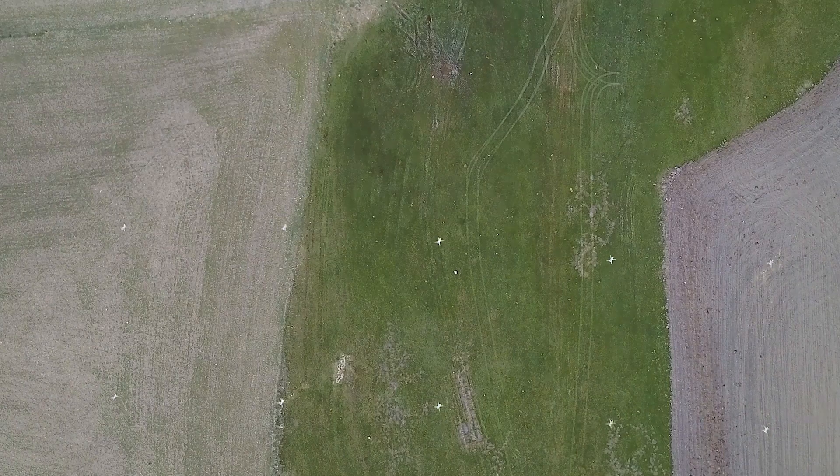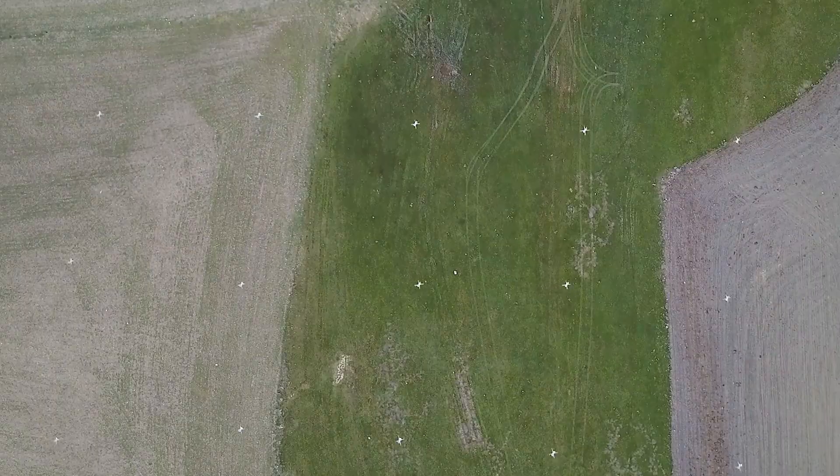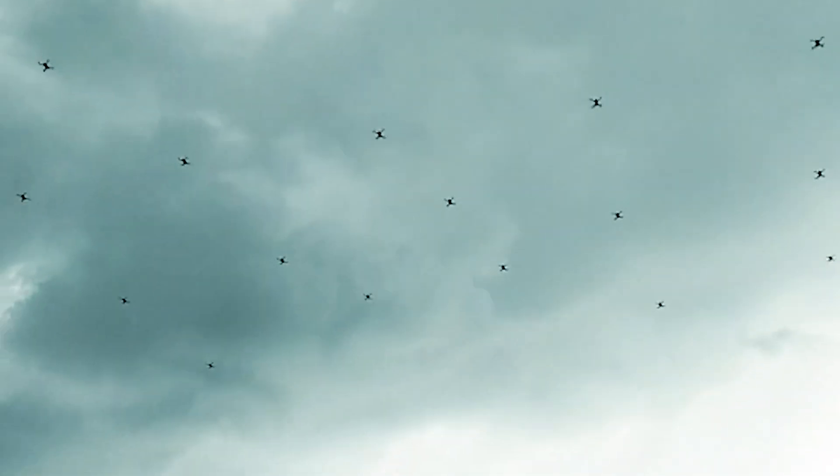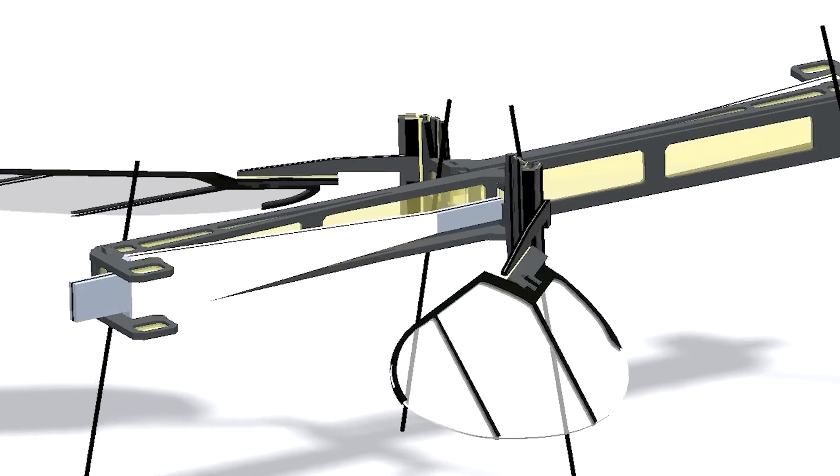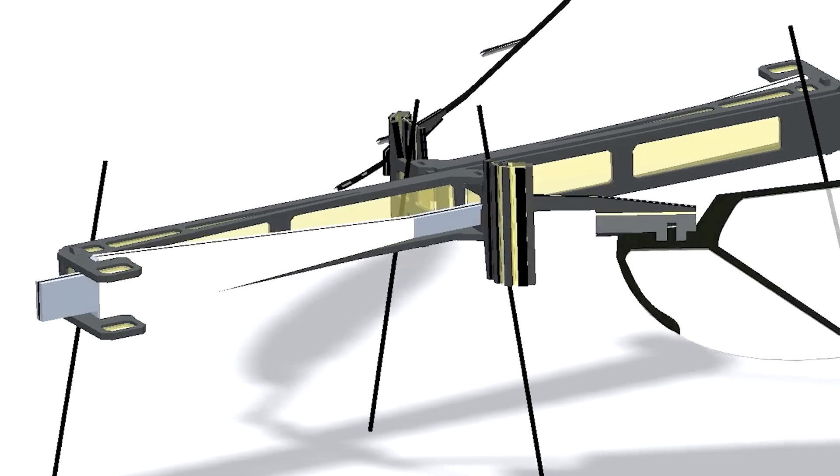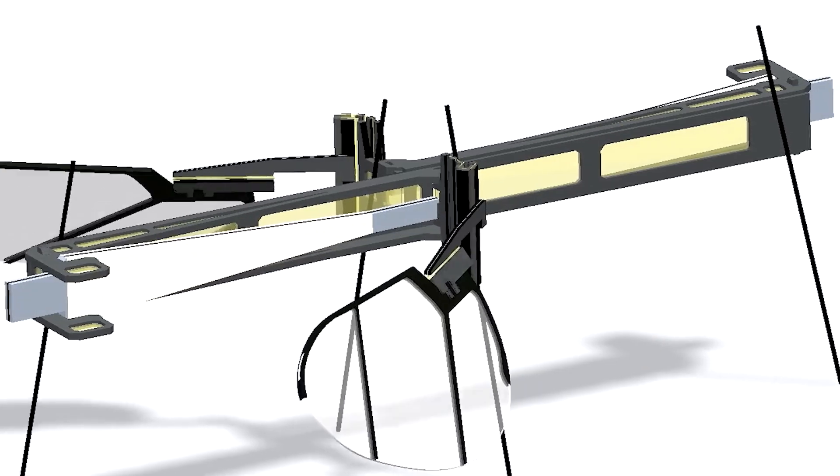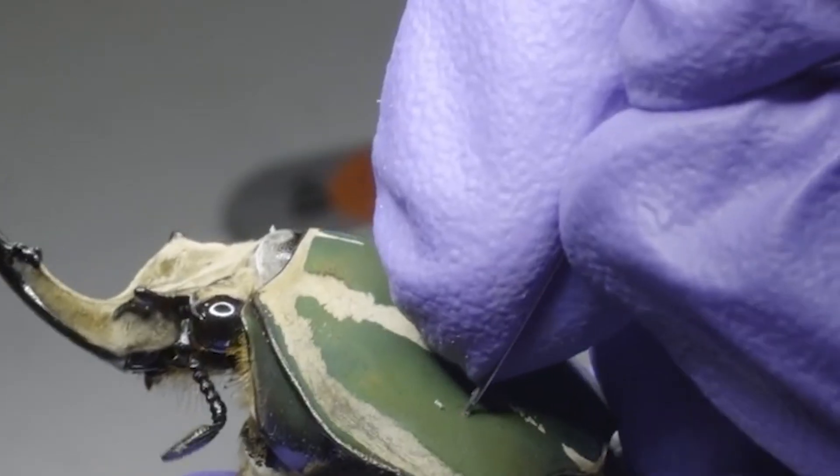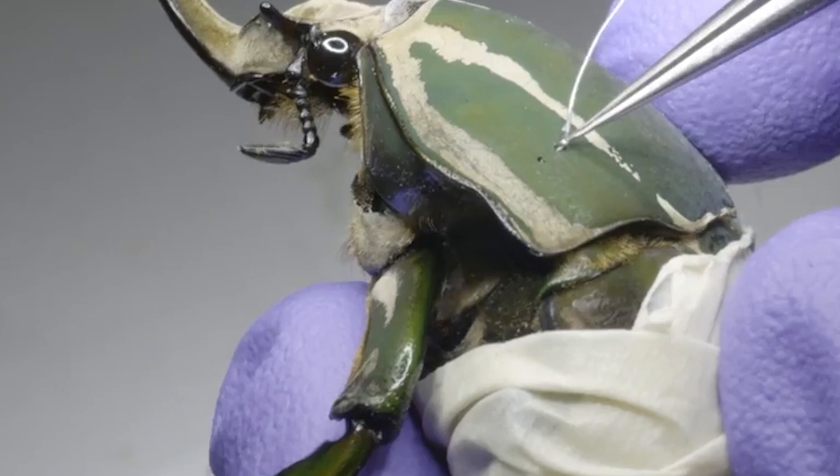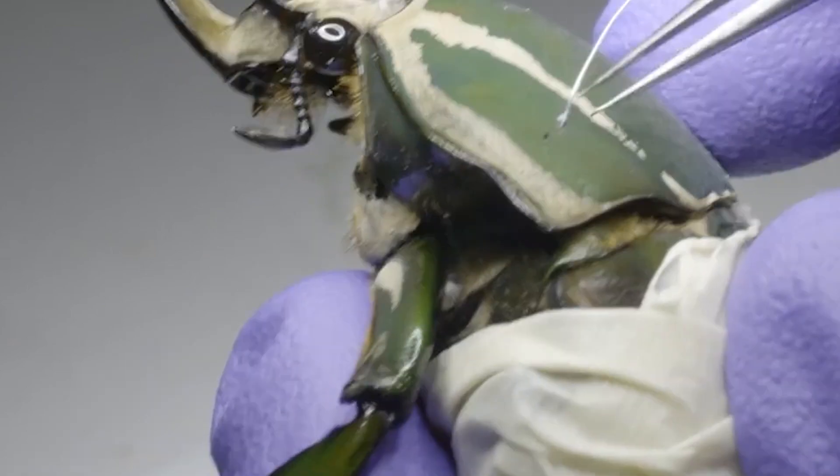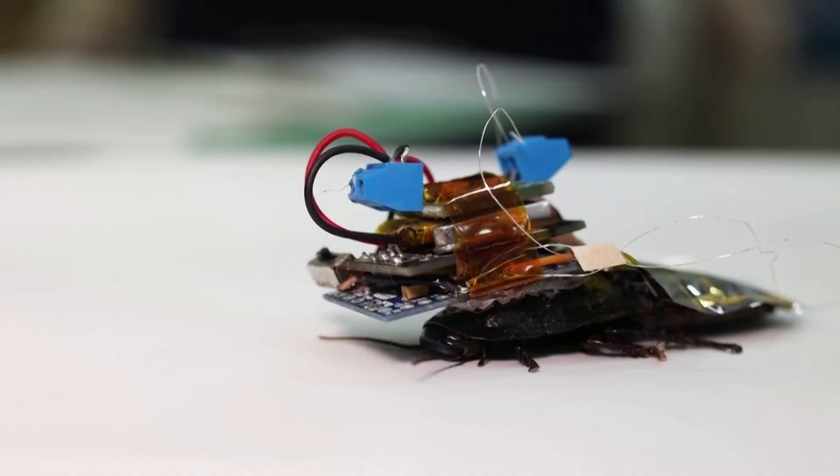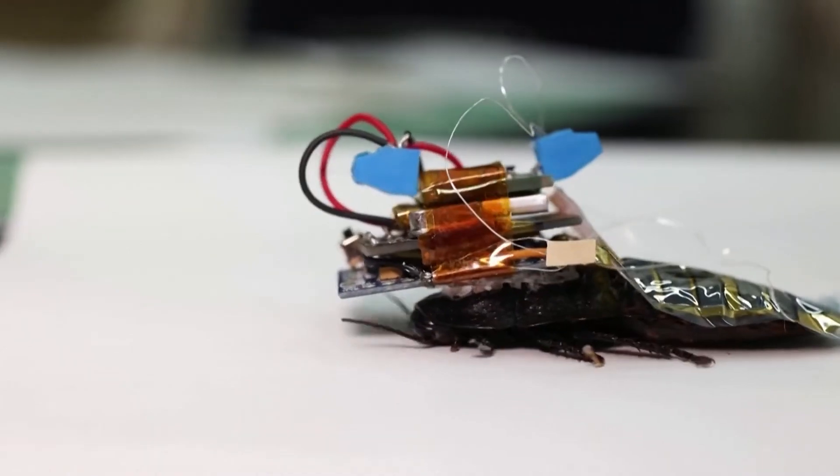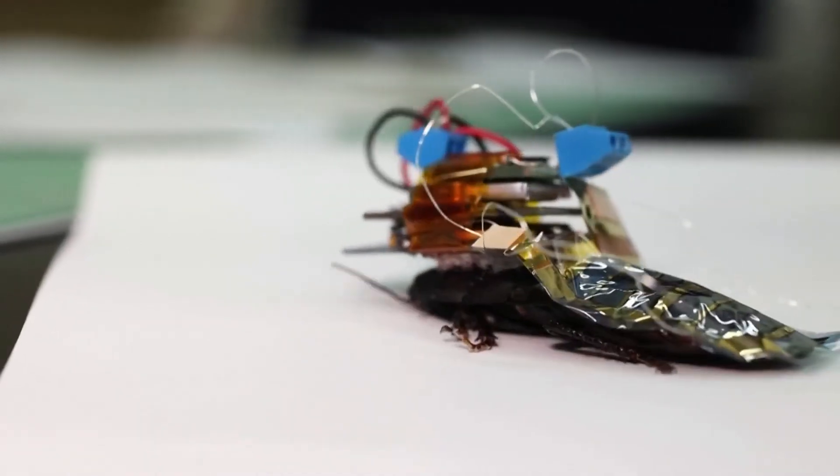This mosquito spy has triggered alarm among privacy and defense experts. Could swarms of these micro-drones infiltrate our homes, offices, or diplomatic spaces undetected? I guess we've officially entered the era of cyborg insects. And there's a pretty wild case in Southeast Asia where scientists from Nanyang Technological University, Osaka University, and Hiroshima University have developed a swarm of them for a single purpose: to navigate challenging terrain.